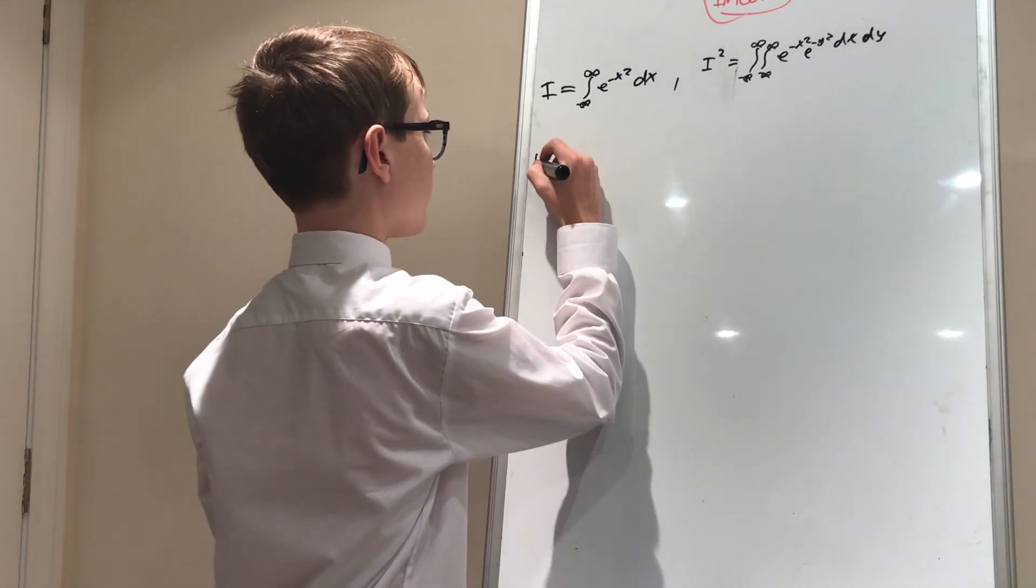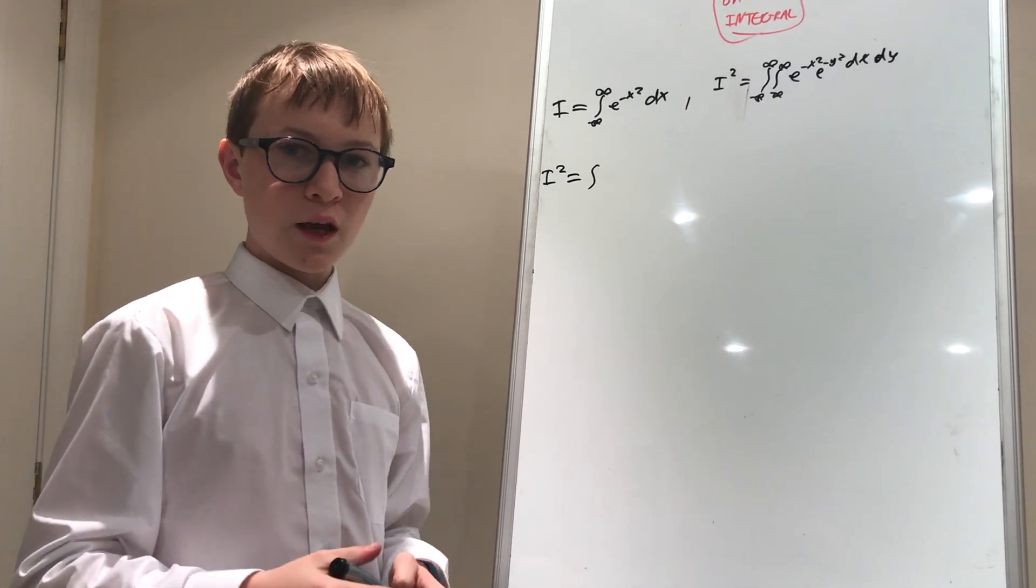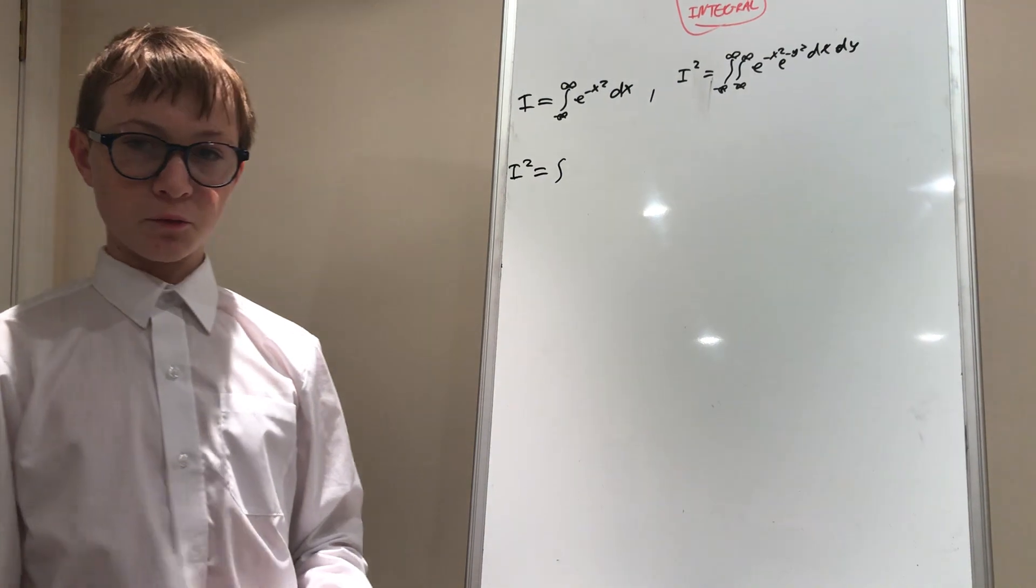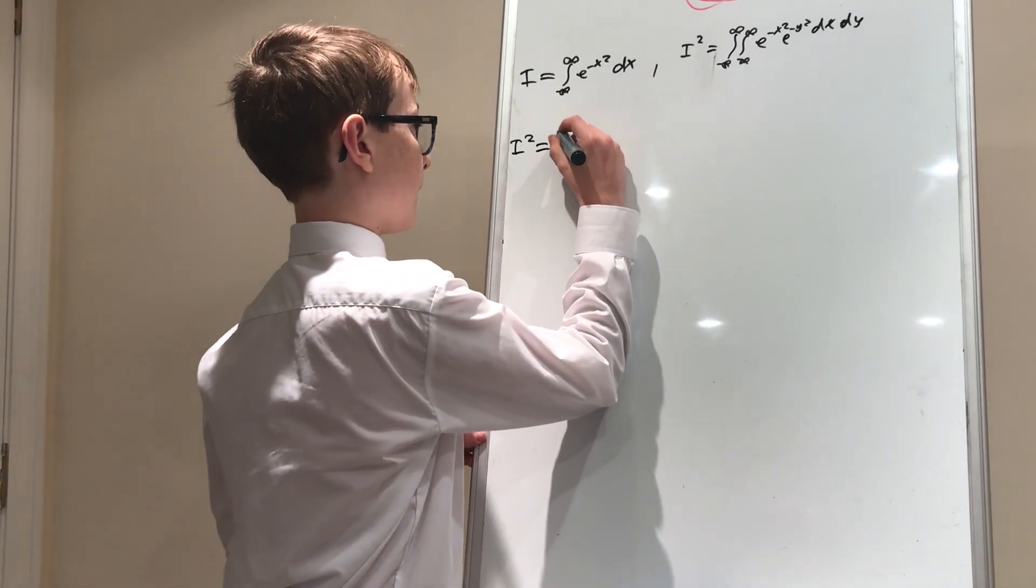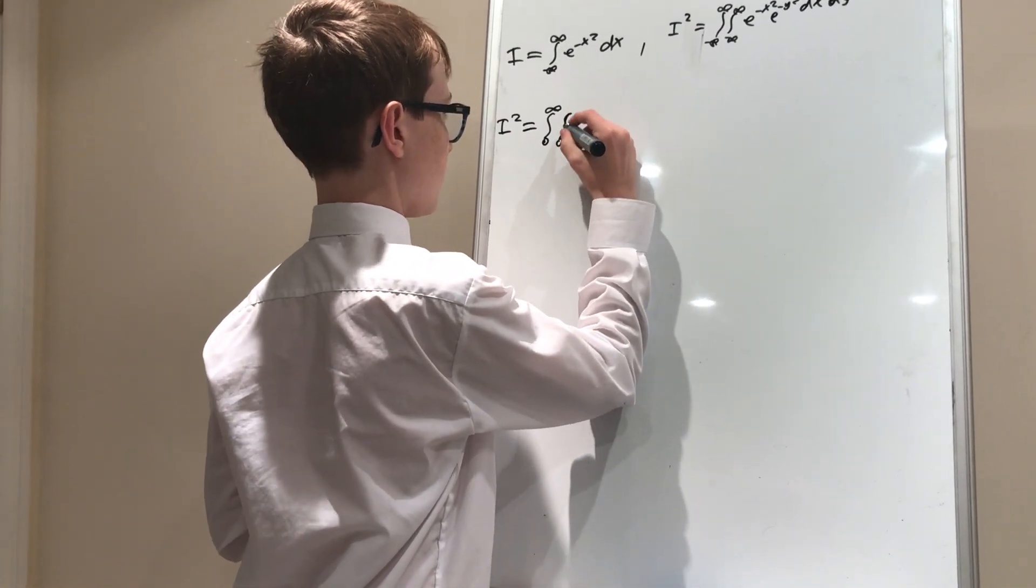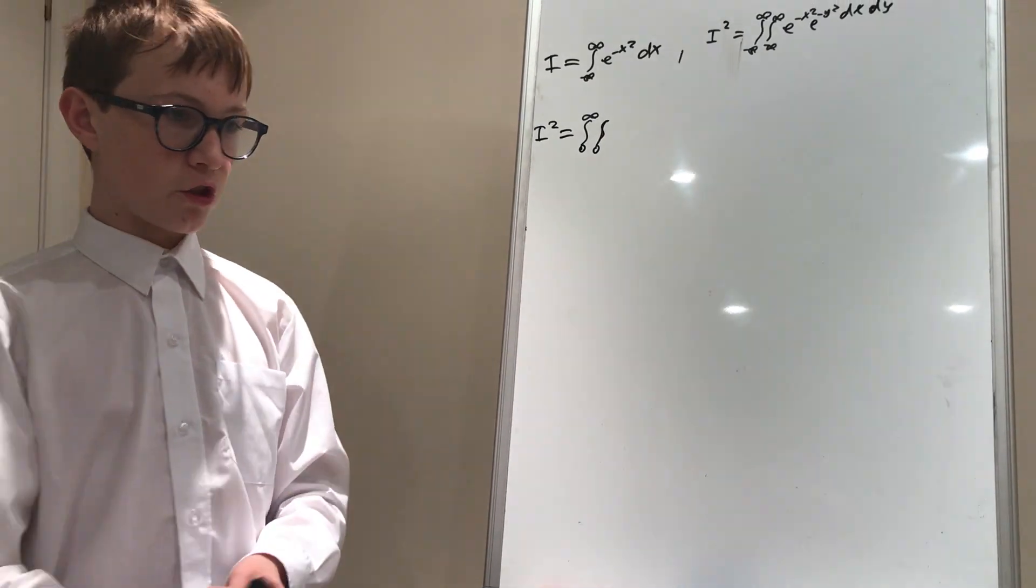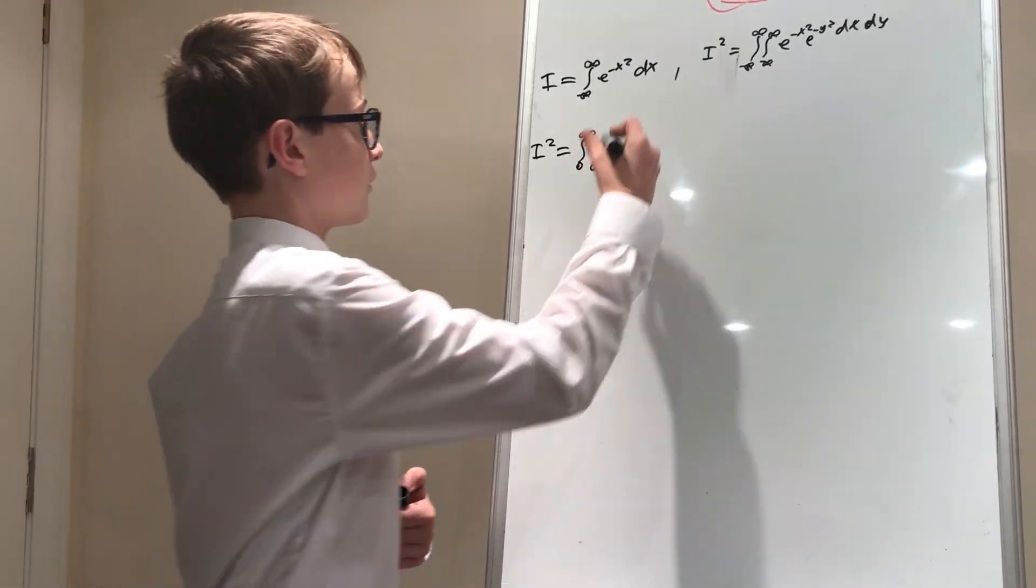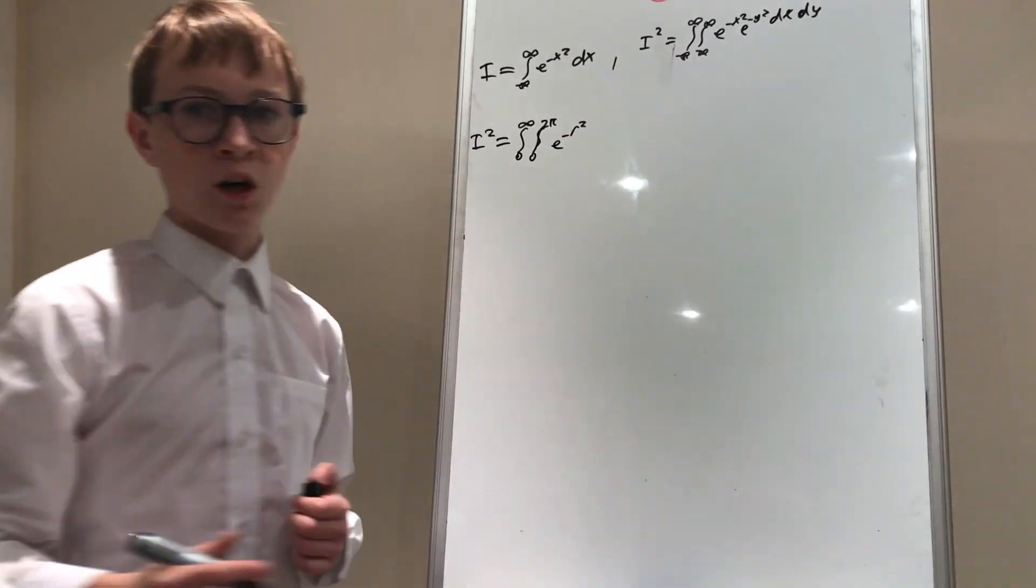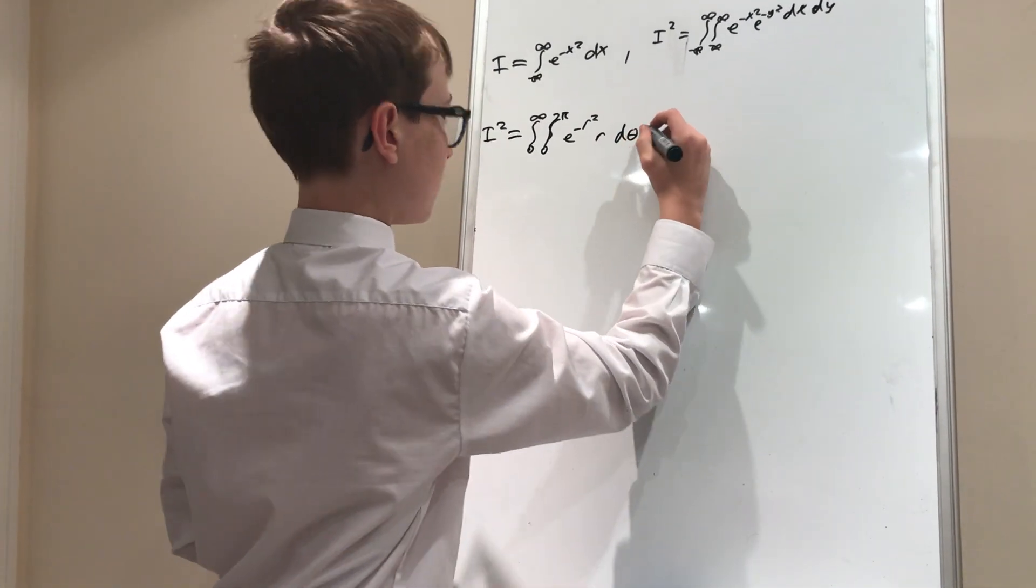So actually, i squared equals the integral. So if we want to cover the entire xy plane, which we do, r, the distance from the origin, only has to be from zero to infinity because we can't have a negative distance. So it's always going to be positive. And then the integral between zero and, well, how many radians do we have to go until we've covered the full circle so that we can cover every point on the xy plane? Well, of course, it's two pi radians. e to the negative r squared times r, according to the Jacobian, which I won't go over in this video, times r d theta dr.